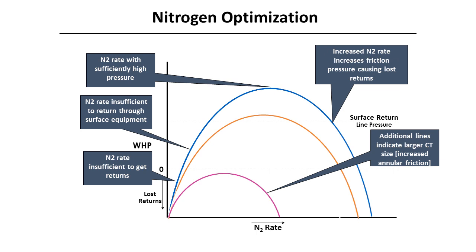This chart shows an example of optimizing nitrogen gas rate. The blue line is optimized until it reaches its peak. Eventually, if we pump nitrogen too fast, the wellhead pressure starts to decrease, even losing returns. The pink line represents a larger coiled tubing size, which increases annular friction.